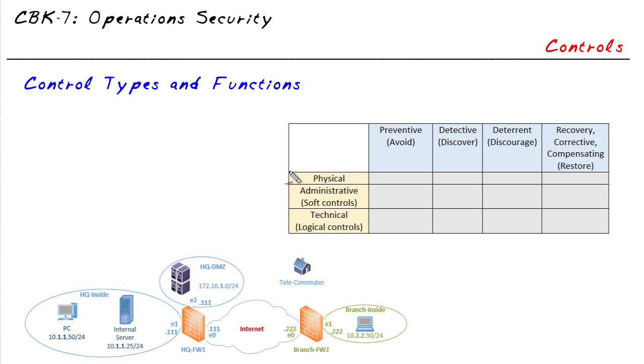It takes a good blend of each of these types of controls—physical, administrative, and technical—to implement a secure system. Now the reason we actually implement these types of controls is for a certain functionality. And across the top here I have the functionality or the reasons for those controls. And I'd like to share with you a few examples.